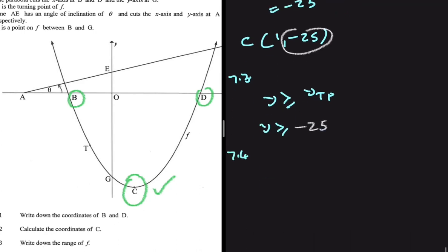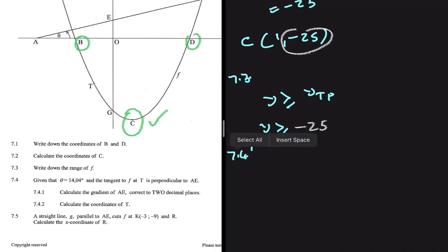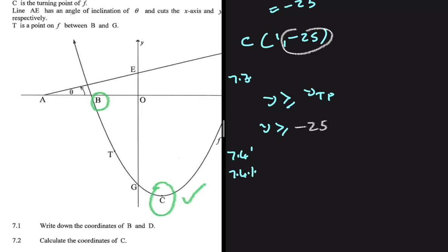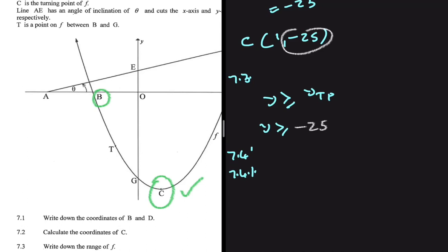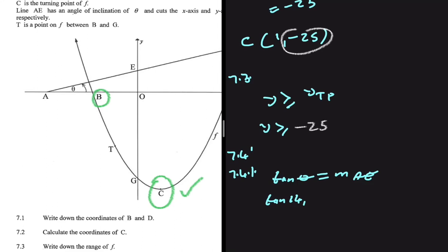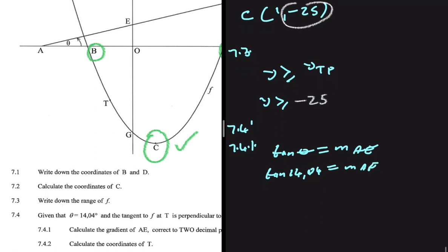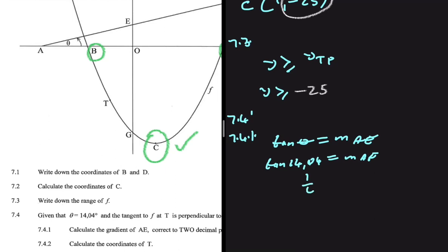7.4: we are given that θ = 14.04° and the tangent to f at T is perpendicular to AE. For 7.4.1, let's calculate the gradient of AE. Since we're given the angle, we know that tan(θ) equals the gradient of that line — in our case, AE. So tan(14.04°) equals the gradient of AE. Putting that in the calculator gives us 1/4 as the gradient of AE.